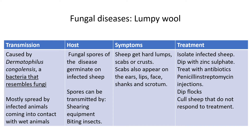If an animal stays wet and hot for around 24 hours and comes into contact with an infected animal, the disease can easily take root on the new host. Fungal spores germinate on infected sheep and can be transmitted by shearing equipment that hasn't been sterilized, or by biting insects carrying spores from one animal to the next.